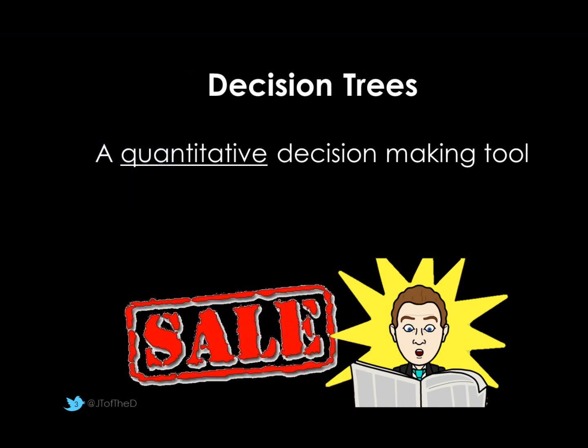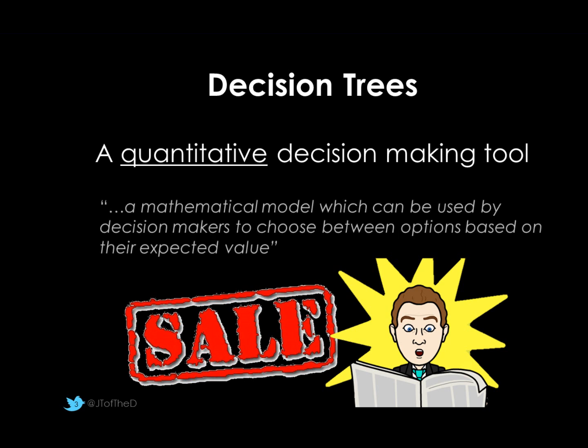The decision tree is a quantitative decision making tool. It looks at numerical data to come up with a final and very definitive answer. Businesses use these all the time. It will give you the idea financially of which is the better of two, three, or possibly more options. For example, should we put on a sale to increase our profits, or should we keep prices as they are and advertise more? The decision tree would give us the answer to this question.